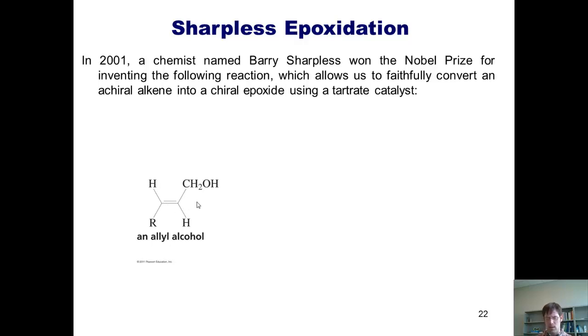If we react our allyl alcohol with tert-butyl hydroperoxide and minus DET, we can faithfully, reproducibly, and predictably get a single enantiomer of this epoxide. DET, by the way, stands for diethyl tartrate, which is a diethylated derivative of tartaric acid, a widely available compound found in grapes and bananas.